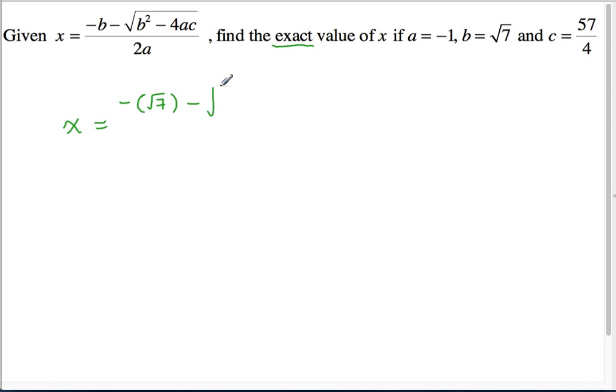So root 7 squared minus 4 times negative 1 times 57 over 4. The other thing we sometimes see students do is when they don't substitute into brackets, suddenly that little bit here, minus 4 times negative 1, right? That's obvious with the 4ac, but I've seen students subtract those values instead of multiply if they don't have brackets.